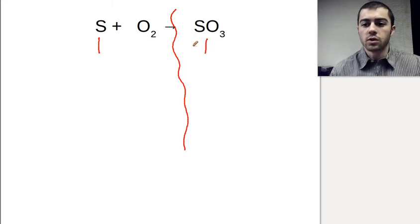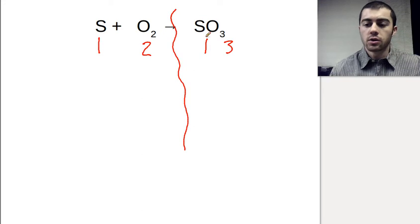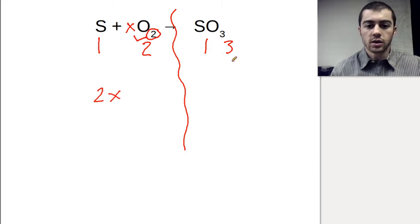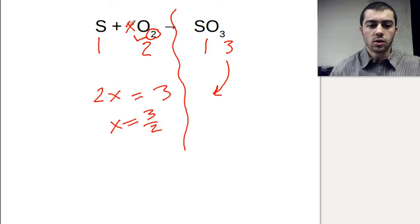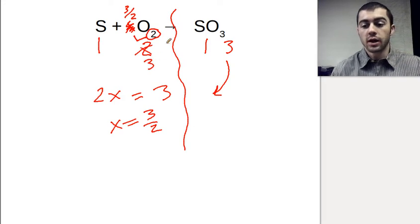We've got one here and one here, so those are good to start with. Oxygen, we've got two and three. There are two ways we can do this — we're going to do it both ways. The first way: we've got some coefficient x here, and two times x, because two is our subscript, has to give us three, because that's how many we have on the right side. So two x equals three, so x would be three halves. We'll put a three halves here, and then we have three oxygens — three halves times two gives us three. Three oxygens, three oxygens, one sulfur, one sulfur. This is now balanced.